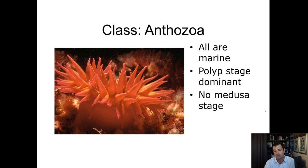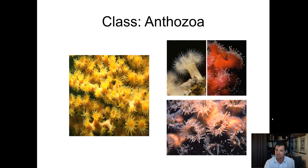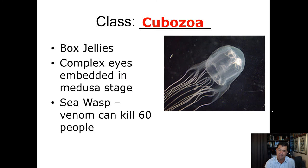Anthozoans include sea anemones — sea anemones are in the class Anthozoa. Coral reefs represent huge amounts of these anthozoans all over mainly tropical reef areas of the world: Australia, Hawaii, and anywhere you have warm tropical water and a good functioning reef ecosystem, you'll find lots of anthozoans.